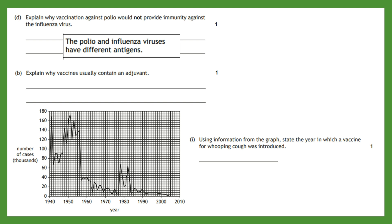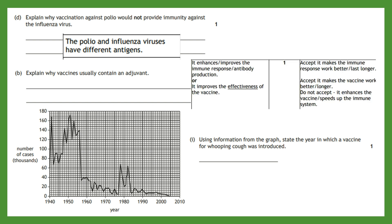The second question asks: explain why vaccines usually contain an adjuvant. The adjuvant enhances or improves the immune response — it boosts antibody production, makes the immune response work better or last longer, and improves the overall effectiveness of the vaccine. Make sure to be clear that it enhances the response, but it is not what triggers the immune response itself.